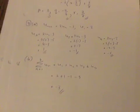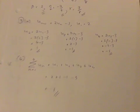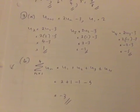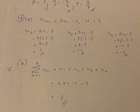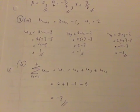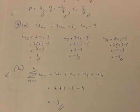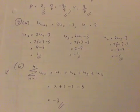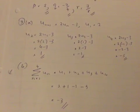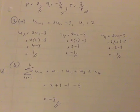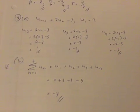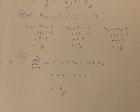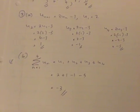Question 9: recurrence relation u(n+1) = 2u(n) - 3, with u1 = 2. So u2 = 2(2) - 3 = 1, u3 = 2(1) - 3 = -1, u4 = 2(-1) - 3 = -5.